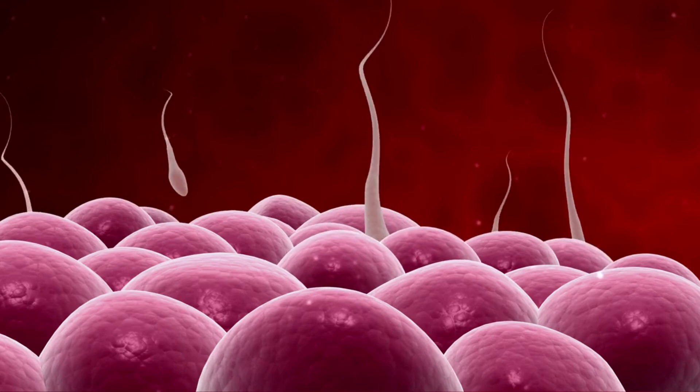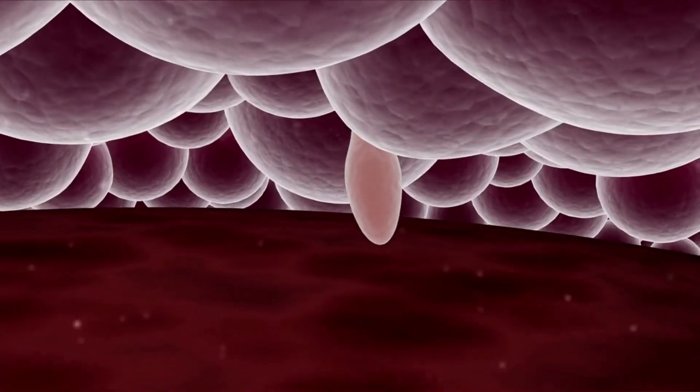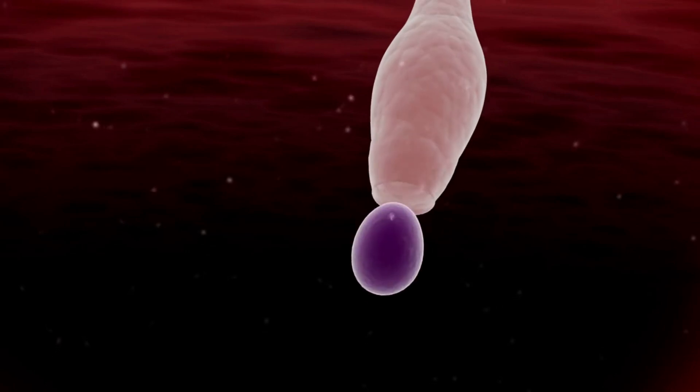Finally, the egg and sperm unite in one of the fallopian tubes to form a zygote, which creates a unique genetic blueprint.